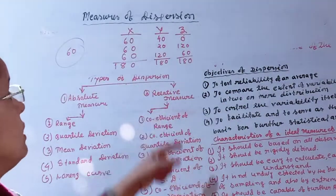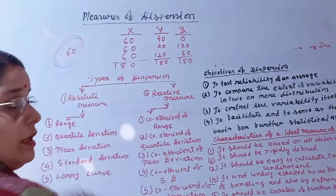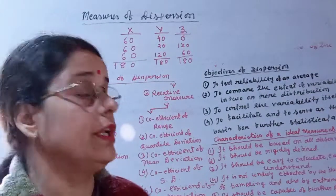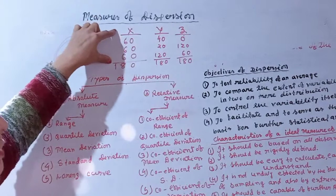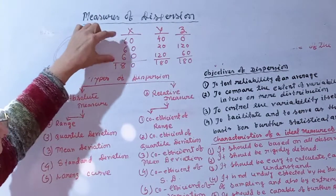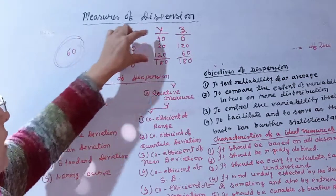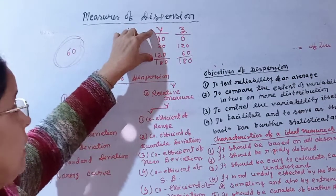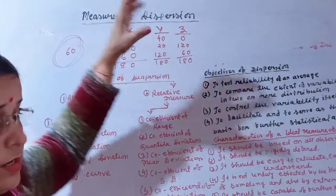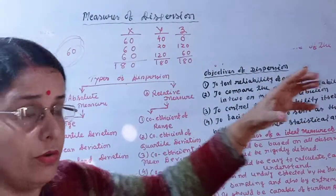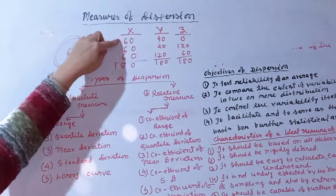For series X, Y, and Z, the mean is 60 in each case. The X series values are all 60. The Y series values are 40, 20, and 120.